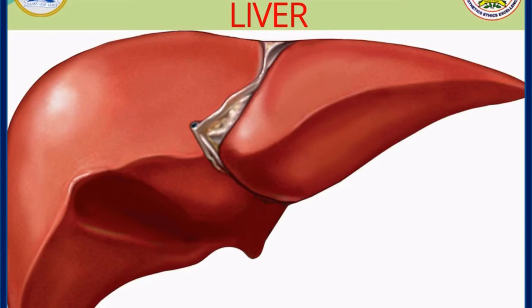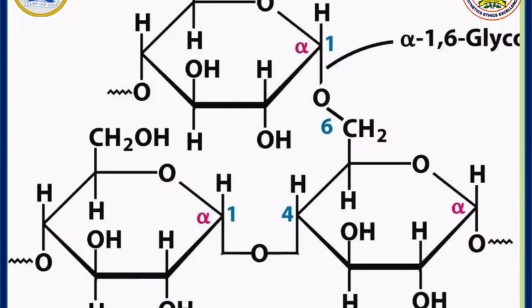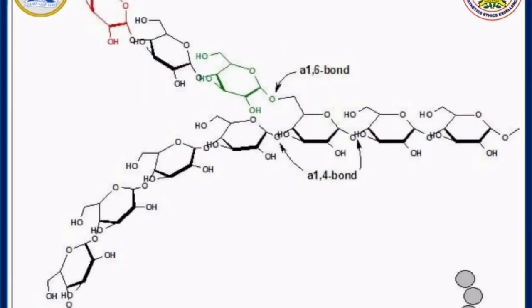About 30 percent of glycogen is stored in the liver. The structure of glycogen is similar to amylopectin, formed of both alpha-1,4 and 1,6 linkages, where the alpha-1,6 linkage forms the branch point. With extensive branching, glycogen looks similar to a tree.